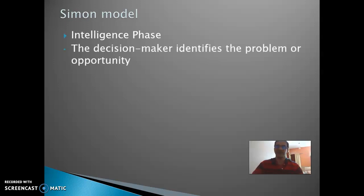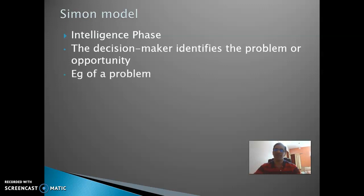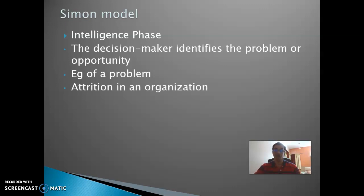In the Intelligence phase, the decision maker identifies the problem or opportunity. The problem could be too many customer complaints, or the quality of products not being up to the mark. Another common problem in an organization could be attrition, which could be voluntary or involuntary.